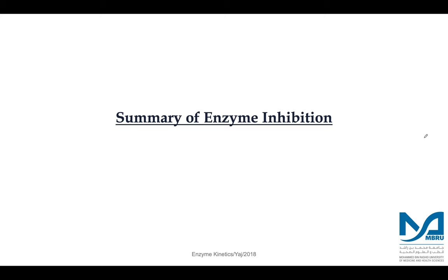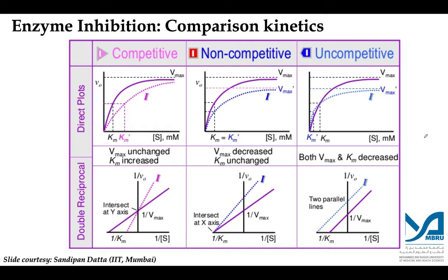We do not have many examples of uncompetitive inhibition in relation to drug action, but there are certain drugs used to treat psychological disorders containing lithium, where the drug binds to its target with an uncompetitive mode of action. This summary slide compares all three types: in competitive inhibition Vmax remains unchanged and Km increases; in non-competitive inhibition Vmax decreases but Km remains unchanged; in uncompetitive inhibition both Vmax and Km decrease. The Lineweaver-Burk plots for each type of inhibition reflect these kinetic changes.